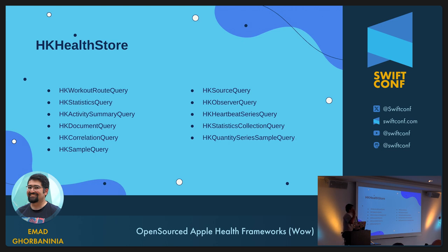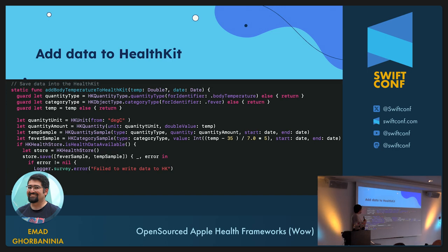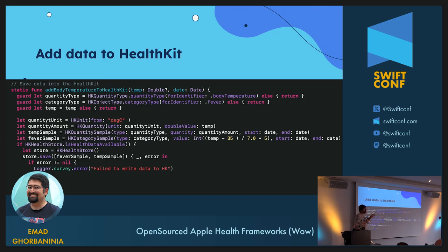But the app I showed you — I didn't use any of this. It's CareKit. My app used only two different queries. There is not much heavy lifting on the numbers side. I do some calculation, making different categories, and then use the store to save the data — as a fever sample and temperature sample. That was the only thing I needed to do regarding HealthKit: storing the data from the survey into health data.